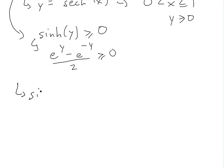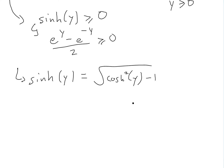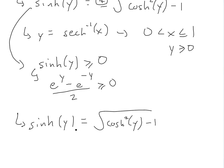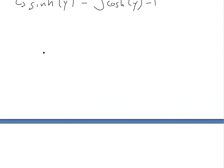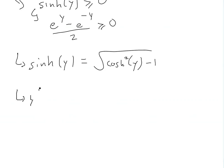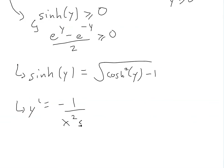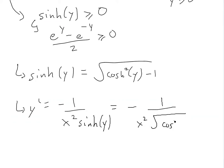So hyperbolic sine of y equals the square root of hyperbolic cosine squared of y minus 1. Plugging this into our expression for y prime, we get y prime equals negative 1 over x squared, all divided by the square root of hyperbolic cosine squared of y minus 1.